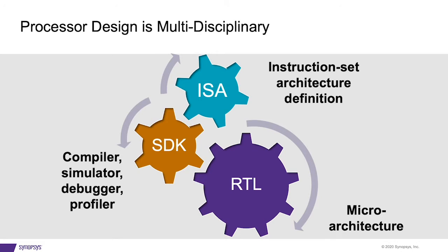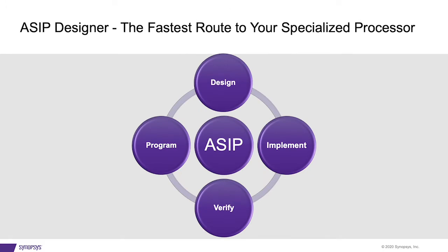Designing your own processor used to be limited to a few experts, as it involves not only the hardware design, but also the definition of the instruction set itself and the development of a fully featured software development kit, or SDK. This is where ASIP Designer comes in — it provides the most efficient way to design, implement, program, and verify your application specific processor.